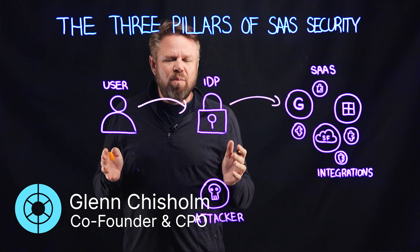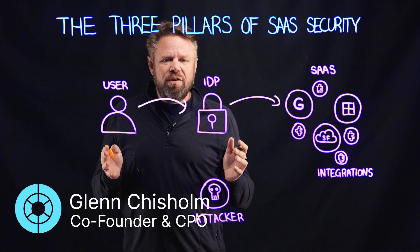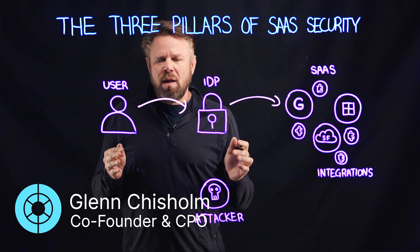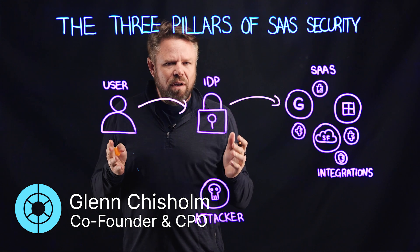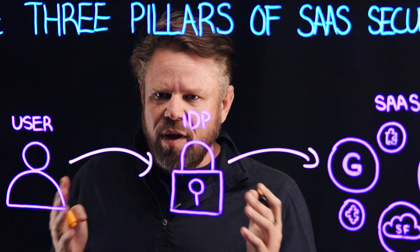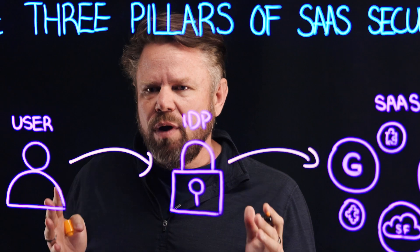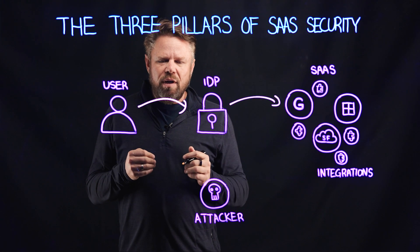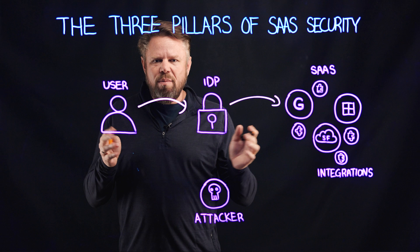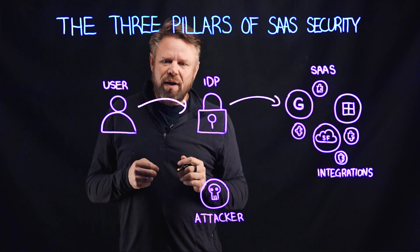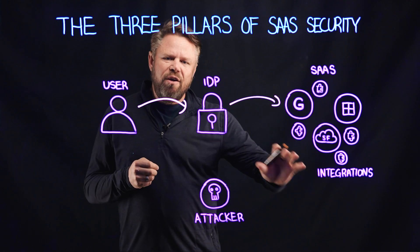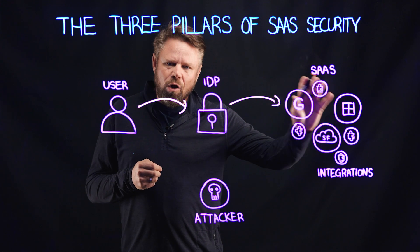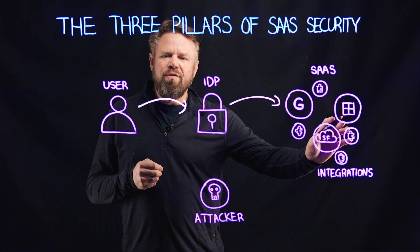This isn't really an appropriate model for SaaS. It isn't really an appropriate understanding of the complexity of the environment. At Obsidian, we really want you to think about three core issues when you think about SaaS. Firstly, you can't think about a user talking to a single application — these applications are heavily connected to each other.